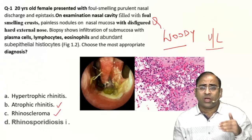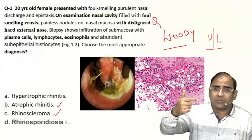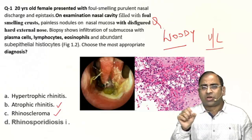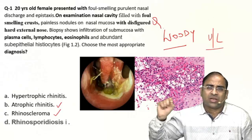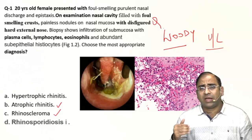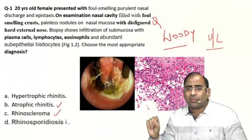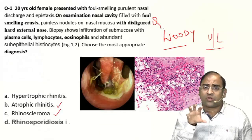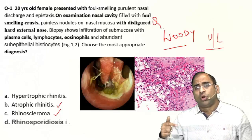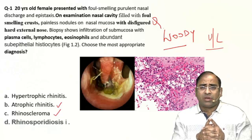The examiner can also give a geographic clue: rhinoscleroma is more common in the northern part of the country; rhinosporiosis is more common in the southern part. If the patient is from Chennai or Tamil Nadu is mentioned in the MCQ, that is a clue for rhinosporiosis, which is exclusively seen in Tamil Nadu. This is again a keyword. Applying this logic, you can crack this lengthy MCQ in 30 to 40 seconds — time management is key.